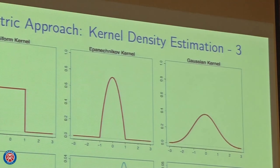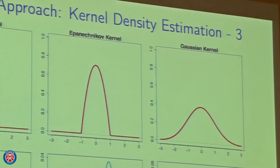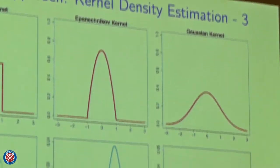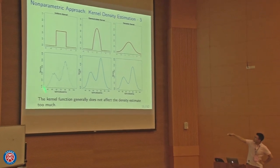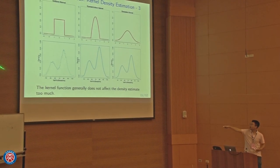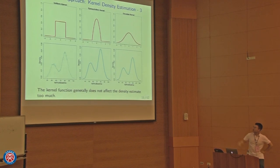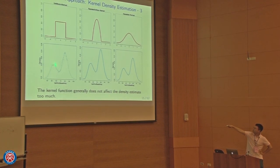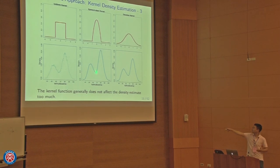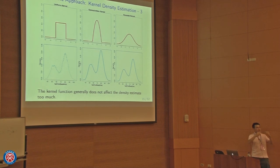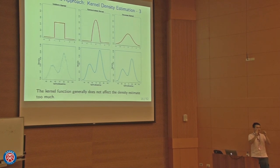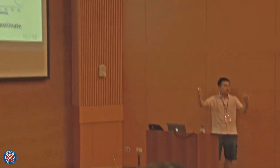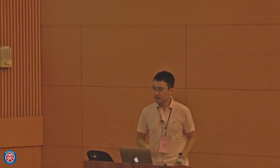Here's a picture showing a bimodal distribution estimated with three different kernel functions. Although the uniform kernel shows a more wiggly structure, the main features are basically the same across all kernels. In theory, the kernel function does not affect the theoretical convergence rate much, but the smoothing bandwidth plays a key role in the estimation.